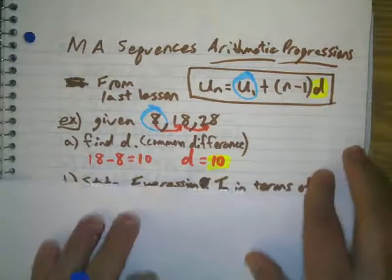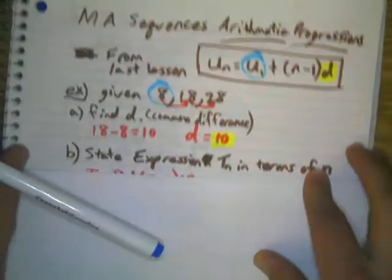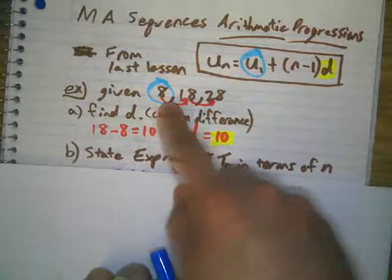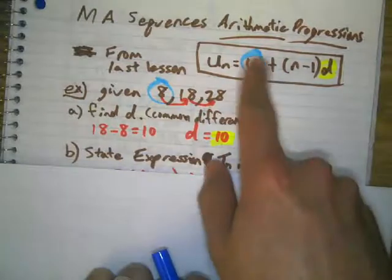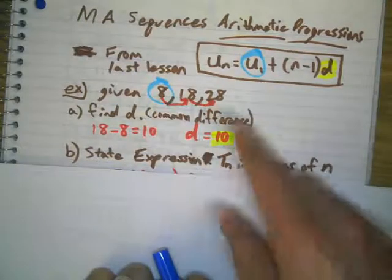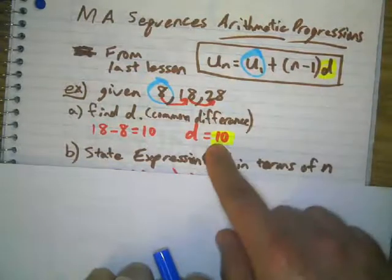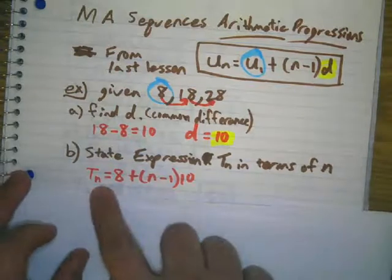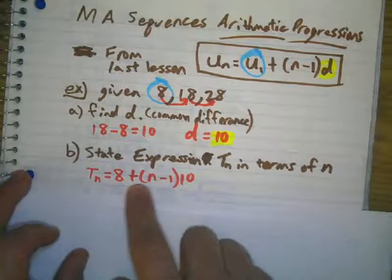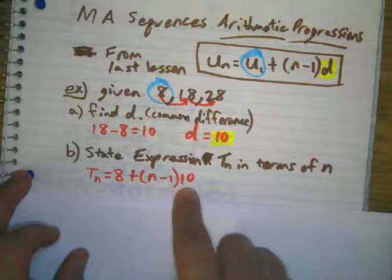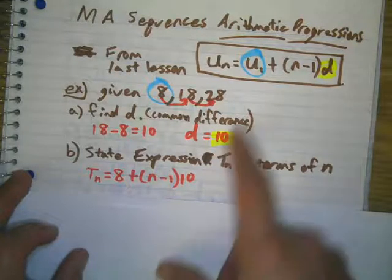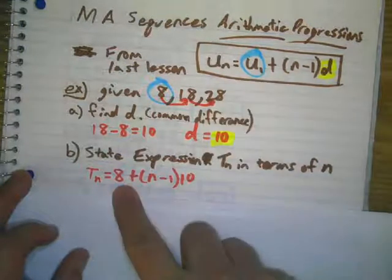Now if they ask you to state my expression in terms of n, well we know the very first term is 8. So I'm going to replace u sub 1 with 8, I'm going to replace d with 10, and then we're going to have our equation t sub n equals 8 plus n minus 1 times 10. I replaced d with 10 and u sub 1 with 8.